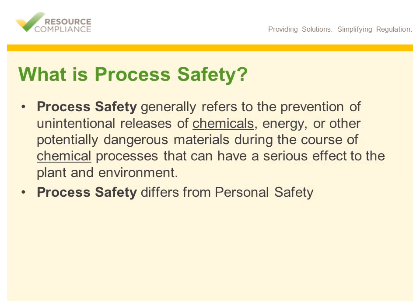Before jumping into any topic, it is always helpful to define the key terms first. With that in mind, process safety generally refers to the prevention of unintentional releases of chemicals, energy, or other potentially dangerous materials during the course of chemical processes that can have a serious effect to the plant and environment. I've emphasized the word chemical and chemicals on this slide because process safety is almost always associated with chemical safety.